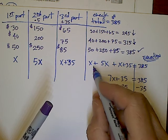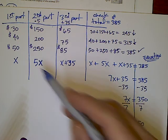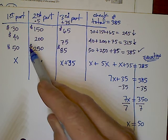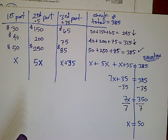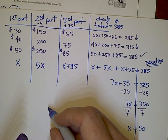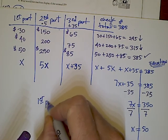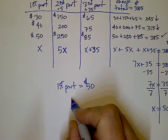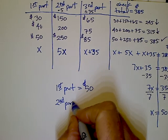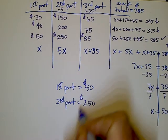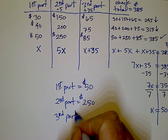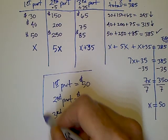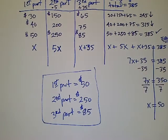If I had defined my variable in the beginning as my first part, now I know x equals 50, which is my first part, and I could find the other parts based on the mathematics. So my answer: first part equals $50, second part equals $250, third part equals $85. And there we have it.